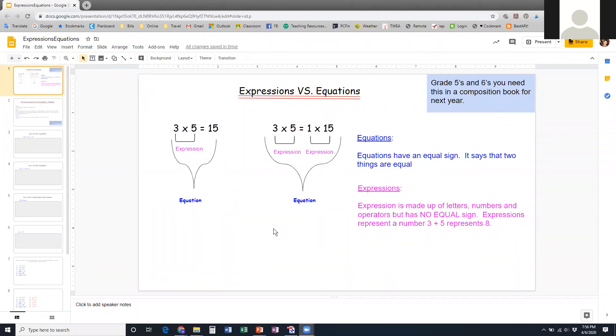When we're talking about expressions versus equations, you have to know the difference between the two. An equation is something that has an equal sign. So this is an equation, this whole thing. It says that two things are equal. You did this when you were in grade one. One plus one equals two. That's an equation.